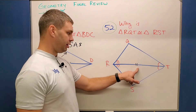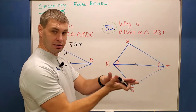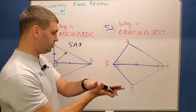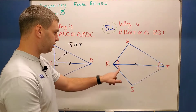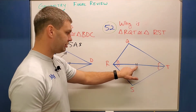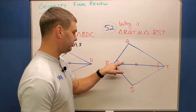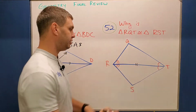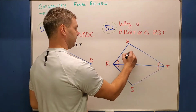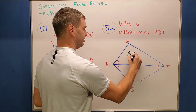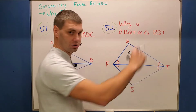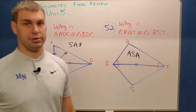What about this one? Again, I marked it up because those triangles are butted up against each other. And then I also have angle-side-angle, angle-side-angle. So I think this one is angle-side-angle triangle congruence.